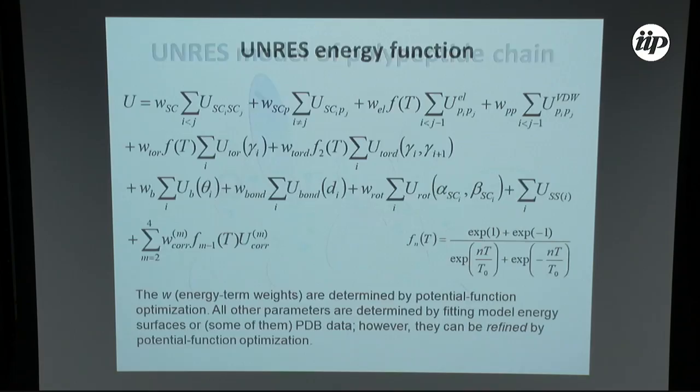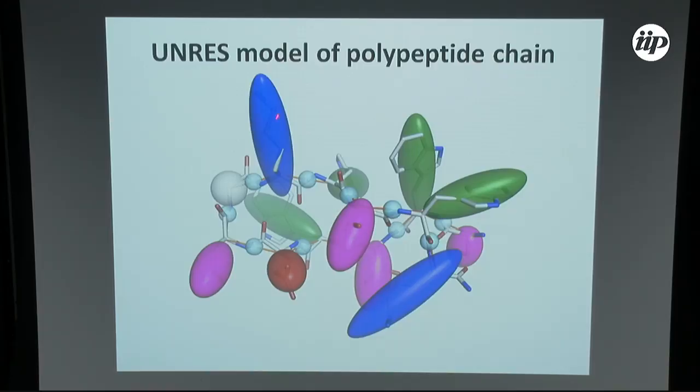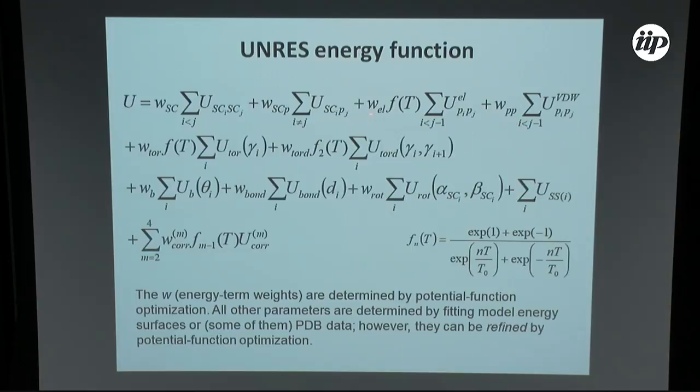Looking at the energy equation, we have interactions between all centers: interactions between side chains, between side chains and peptide groups, between peptide groups, and several parameters describing torsional, double torsional bending, bond rotation, side chain position, disulfide, and so on. What makes this UNRES energy function different from others is first of all that we have additional factors — because we treat this energy not as a potential energy but as a free energy, so it depends on temperature — and we try to reproduce this.